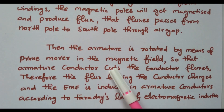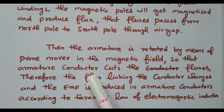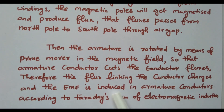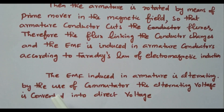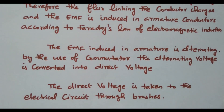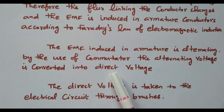The armature is rotated in an already available magnetic field, so the armature conductors cut the magnetic flux. Due to the rate of change of flux, EMF is induced based on Faraday's law of electromagnetic induction. The EMF induced in the armature is alternating. By the use of a commutator, the alternating voltage is converted into direct voltage. The direct voltage is taken to the electrical circuit through the brushes. The commutator collects the current and converts it into direct current; it is collected through the brushes.